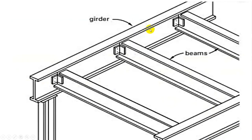Here you can see the girder and the beam — the beam transfers load to the girder as a concentrated load. The beam and girder are connected with plates, and the beam transfer works here as a concentrated load.